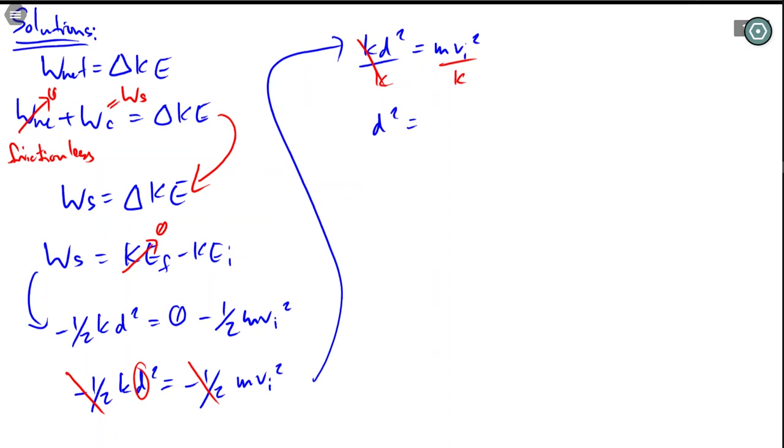Okay, then take the square root. You do that all in one step. Boom. That becomes d is equal to the square root of mass times v squared over k.